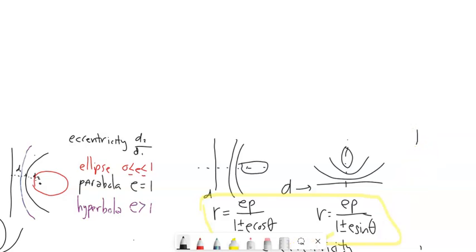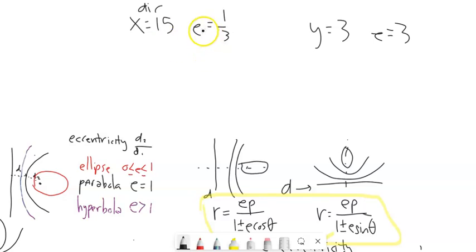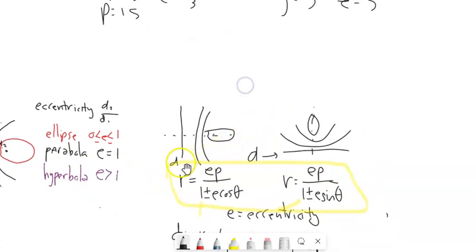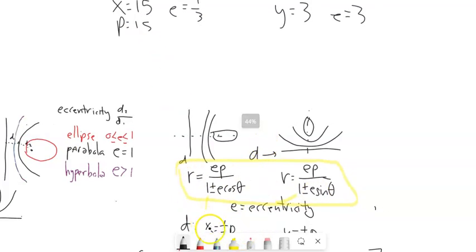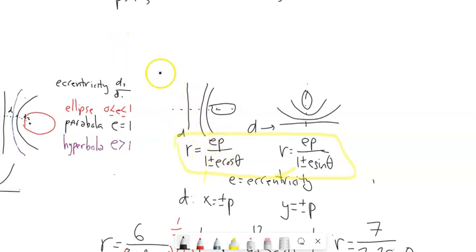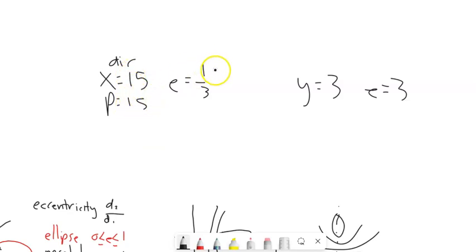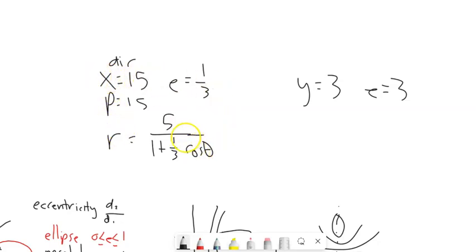Now let's go the opposite direction: I'll give you the information and we'll write the equation from it. The directrix is X equals 15 and E is one third, so P is 15. Since it's X equals, it's the cosine version. E times P goes in the numerator: one third times 15 is 5. It's positive, so plus one third cosine theta in the denominator. Multiplying everything by 3 to clear the fraction gives R equals 15 over 3 plus cosine theta.